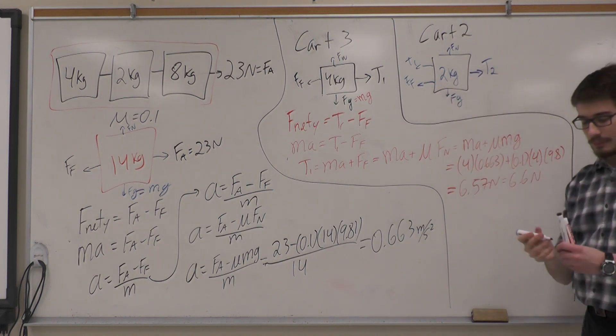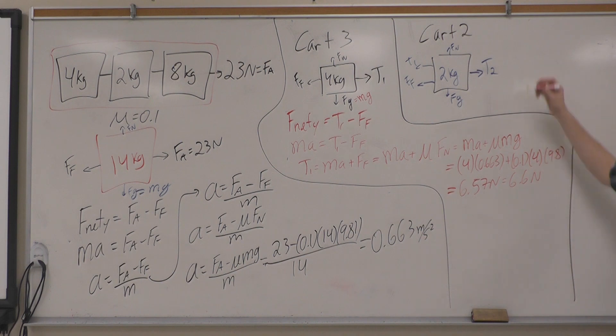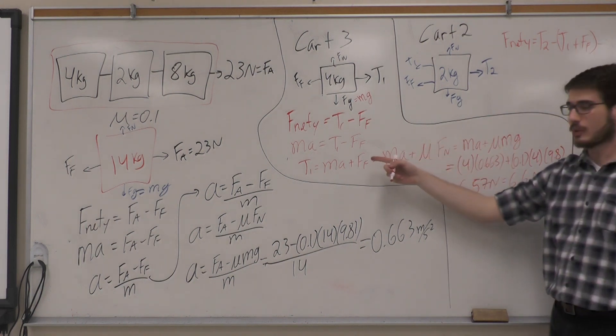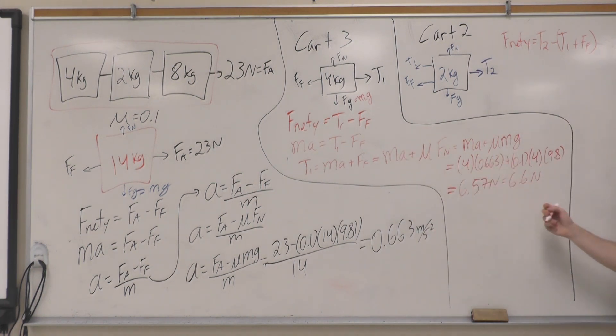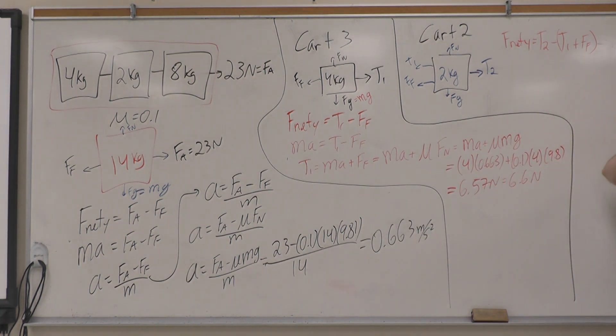We want to look for the y component. We'll have that F net y is equal to tension 2, and it's working against tension 1 and friction. Just like the previous solution, we can change F net to MA, and all the other variables are present. We're isolating for tension 2, so tension 2 will be equal to MA plus tension 1 plus force of friction.